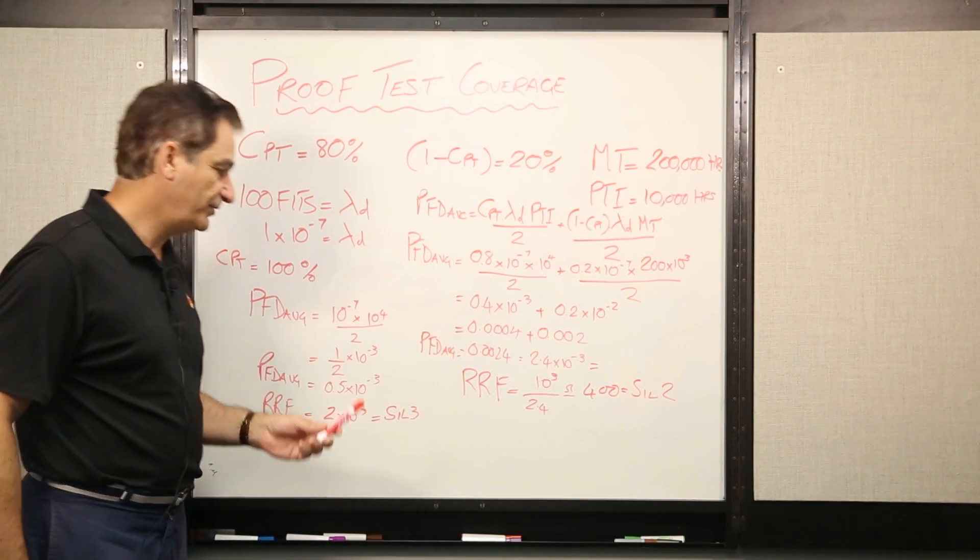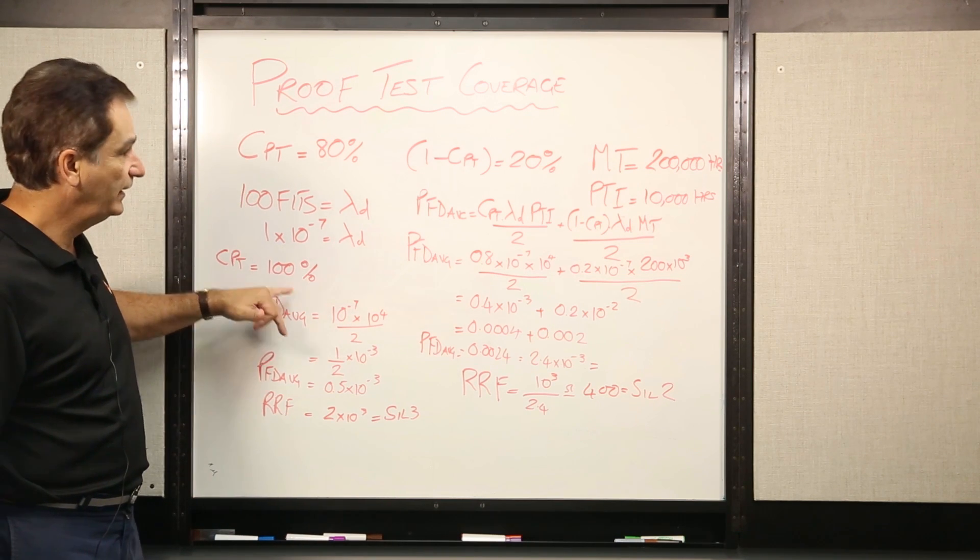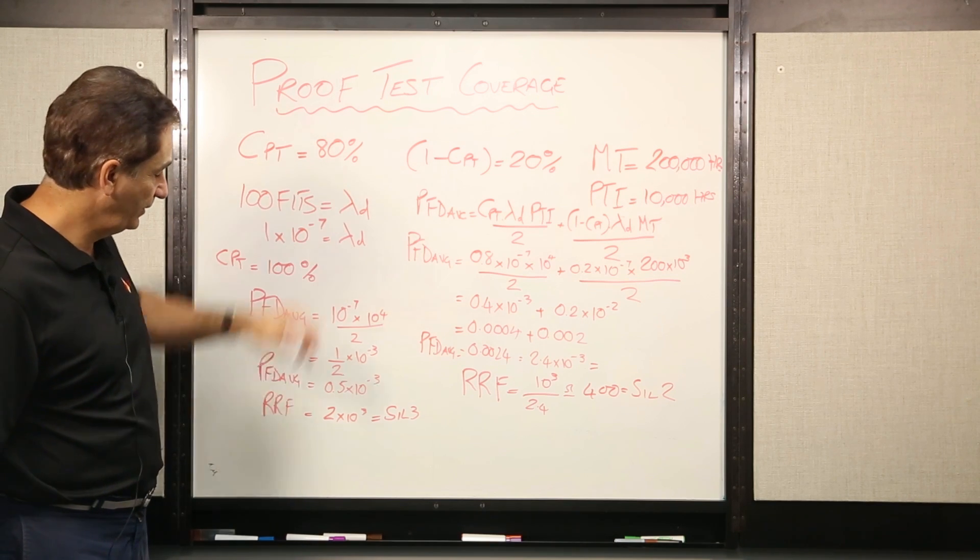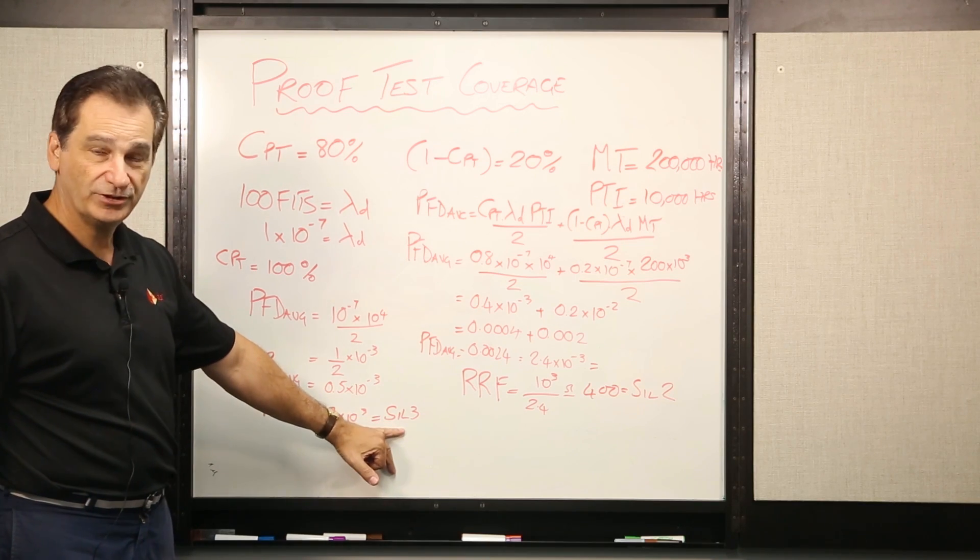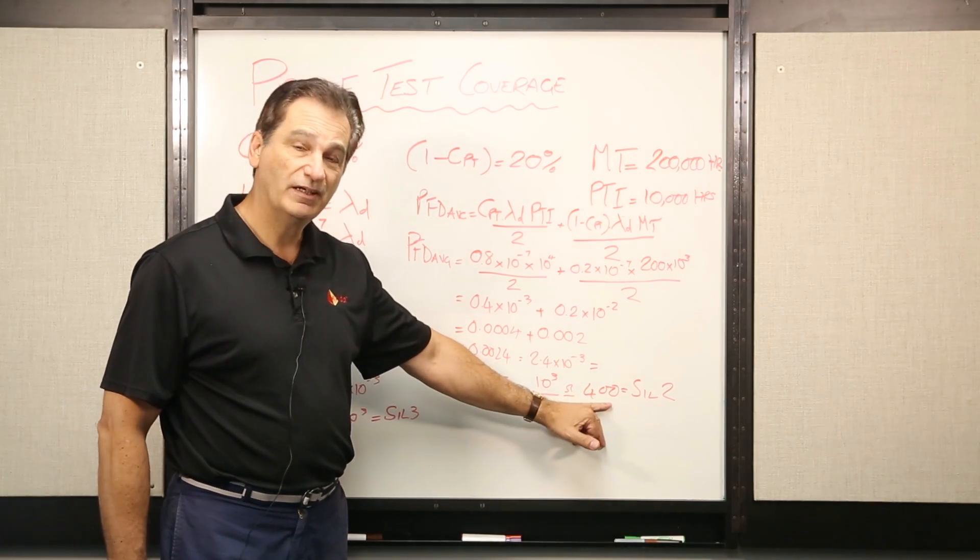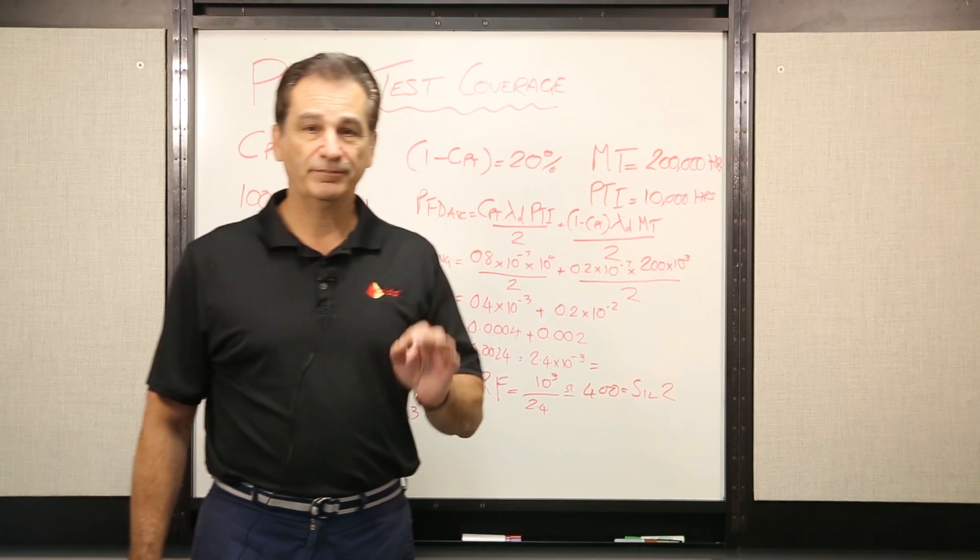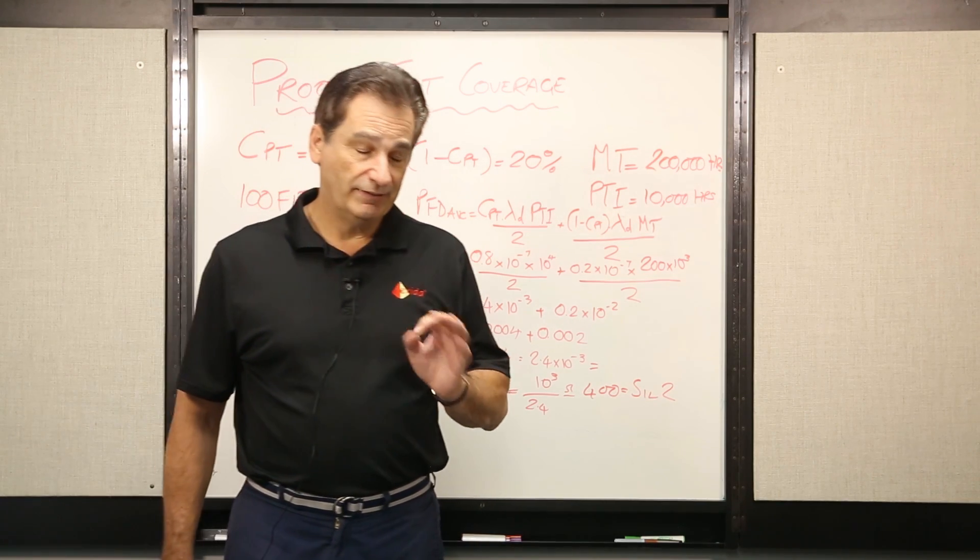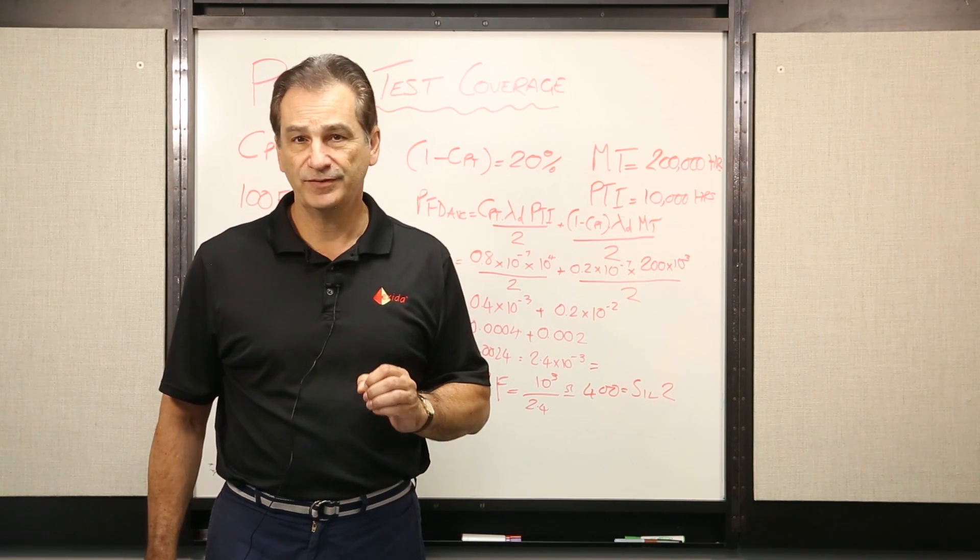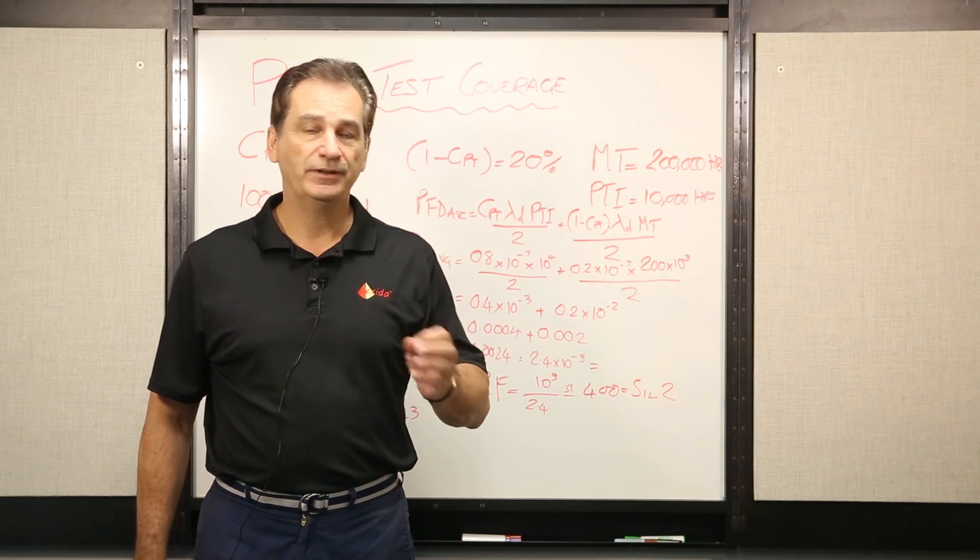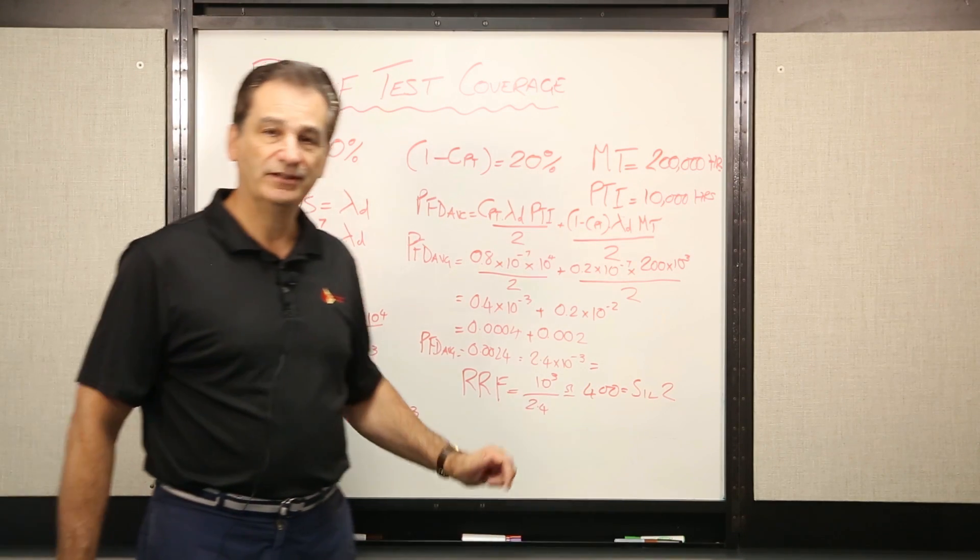But as you can see, just in looking at this simplified approach, the difference between assuming a perfect proof test and having a realistic proof test coverage in this case is almost five times different and takes us from being able to achieve a SIL 3 to being able to achieve a mid-level SIL 2. So proof test coverage is very important and it's something that you need to be aware of and consider. Even now, some end users that we've come across are still using 100% proof test coverage. All that's doing is fooling you into thinking you have a higher integrity level than you actually really have.